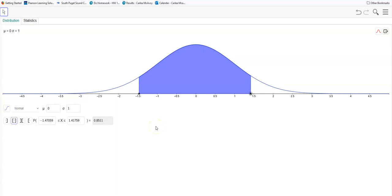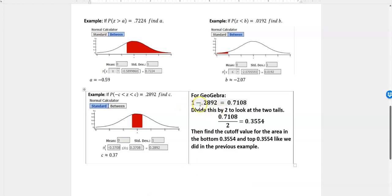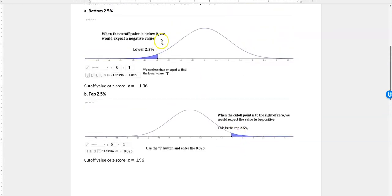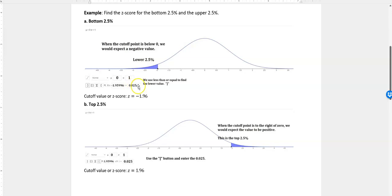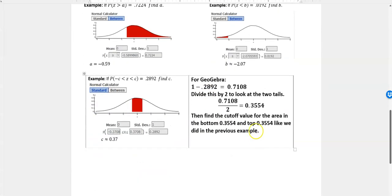What we would do is go back to my example and I'll show you what I would tell you to do. I would take the one, so this area in here is 0.2892, I would take one minus that and find out that I have 0.71808 on either end. And then I would divide that by two and that would tell me that I know that I have 0.3554 on either side. So I would go in and just like I did up here when I was looking for top and bottom, instead of entering 0.025 I would be entering 0.3554 for the bottom and then the top, and that would give me these two values here.